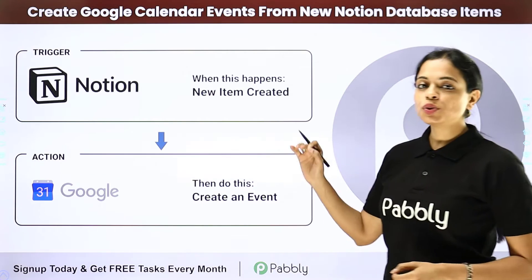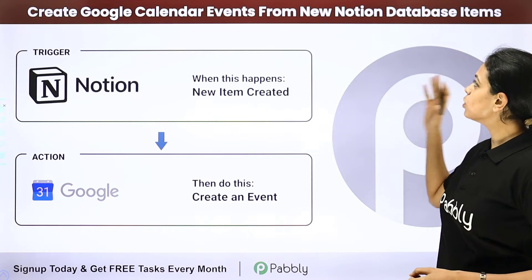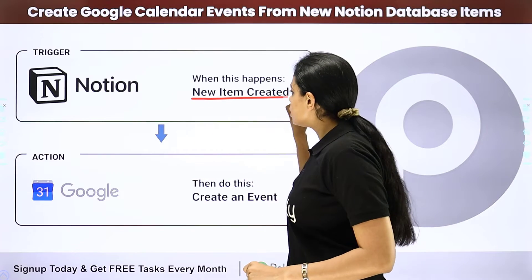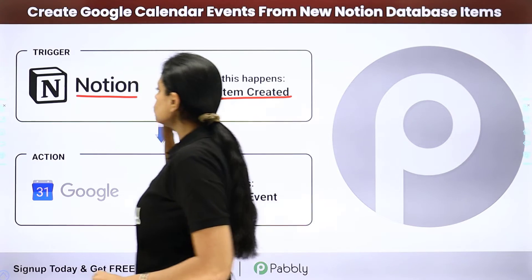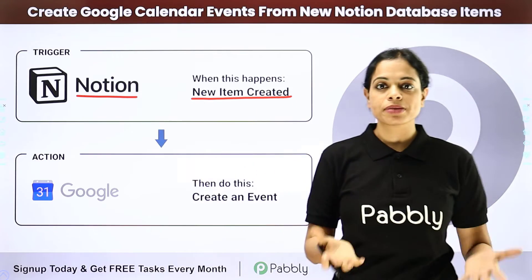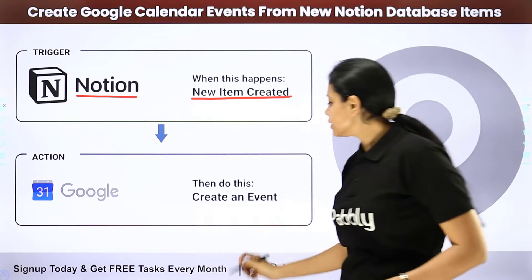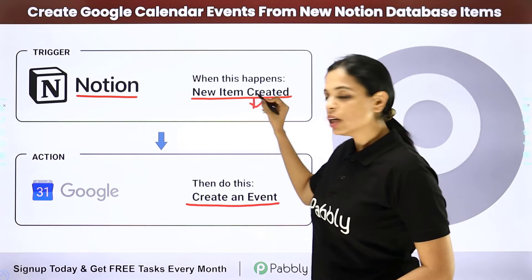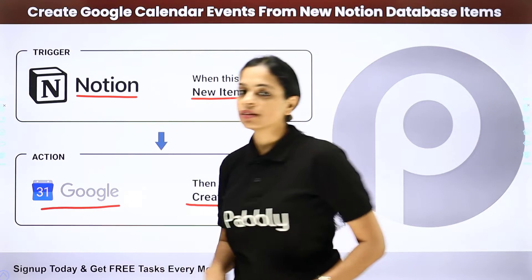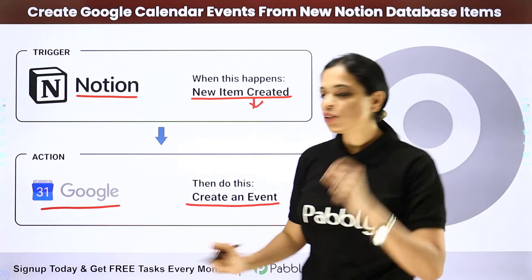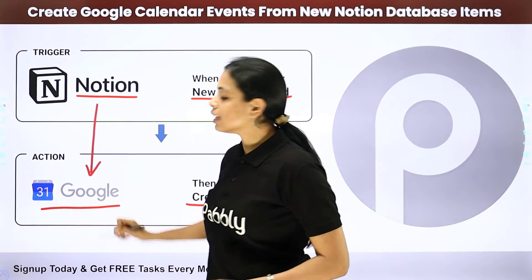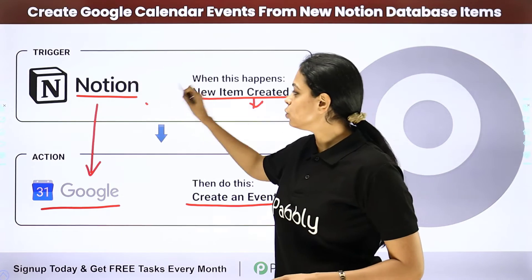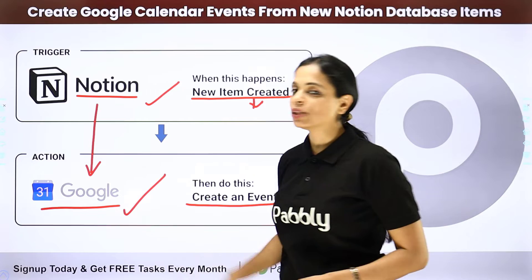In this video, we are going to see how to create Google Calendar events from new Notion database items. Every time a new database item is created in Notion, which is a note-taking web-based application, automatically an event would be created with the details on Google Calendar. To do this, you will have to integrate the two applications using Pably Connect software, where your trigger application would be Notion and your action application would be Google Calendar.